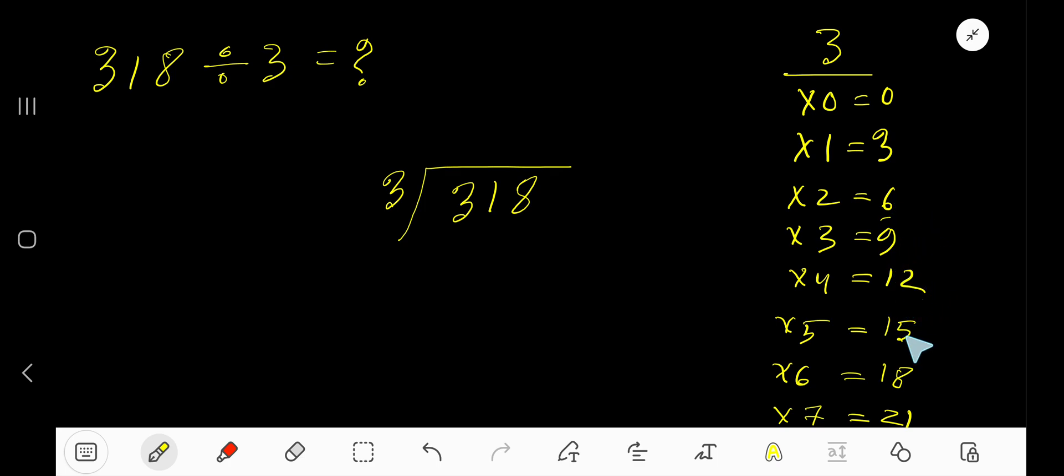9 plus 3 is 12. This process will continue. 3 goes into 3 how many times? 1 time. 1 times 3 is 3, subtract to get 0. Bring down this digit. Now our working dividend is 01.